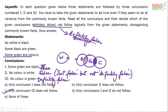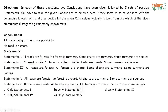So your answer should be only conclusion 3 does not follow. The trick we can use in such questions is: write down true, false, definitely true, definitely false, and then mark the answer. First one is true, second one is false, third one is definitely false. Since we are looking at what is definitely false, option C — only conclusion three does not follow — is your answer.